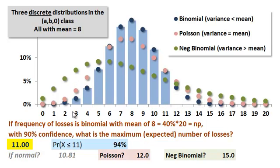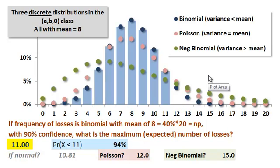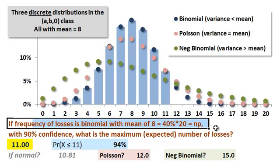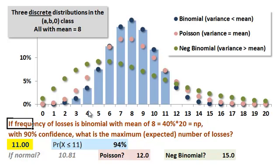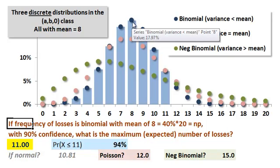I've plotted for the binomial some vertical bars to illustrate the quantile function. But first, let's show why it's an inversion, because we typically look at a distribution and ask a question like: what's the probability our random variable x will be 11 or less? And the answer comes back as a probability between 0 and 1. Now, if the frequency of losses is binomial with a mean of 8 — the binomial has two parameters, N and P: probability of 40% times number of trials 20 — the mean is the product of N and P, or 8. You can see that 8 is the mean here; it's also the mode, the highest probability at almost 18%.